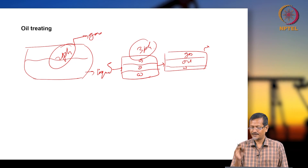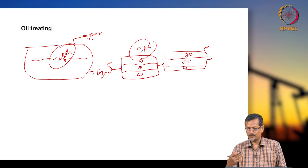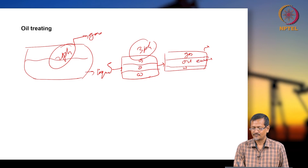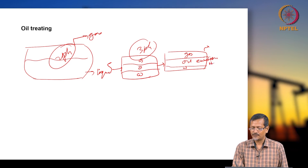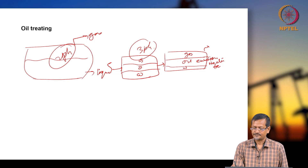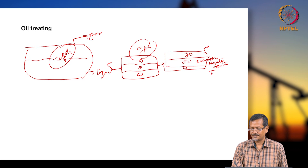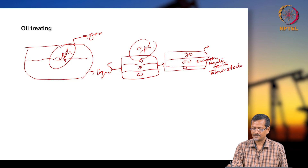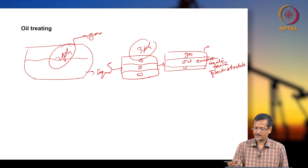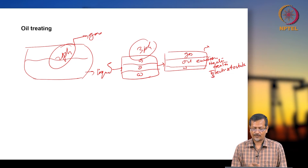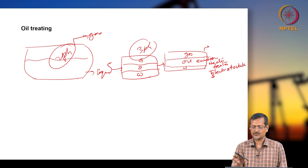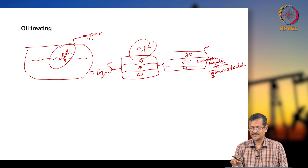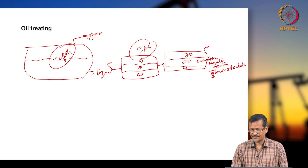From oil again you try to remove water and gas. Here emulsion treating theory will come — heater-treater will come, electrostatic precipitator, electrostatic separator, or emulsion breaker will be there. Those mechanisms will come. We will discuss later specifically when we discuss the oil separating system — how emulsion treating system will be put in place, how heater-treater will be working, how the electrostatic system will be there.